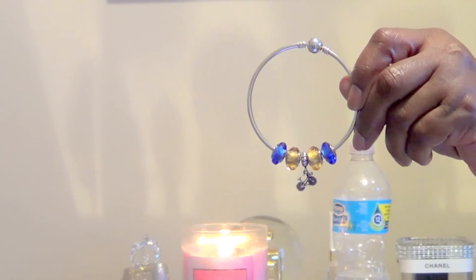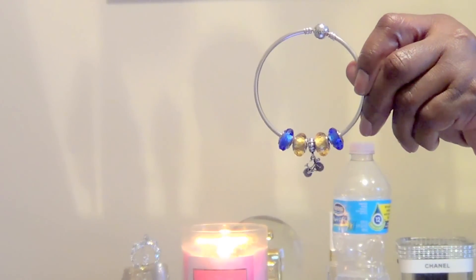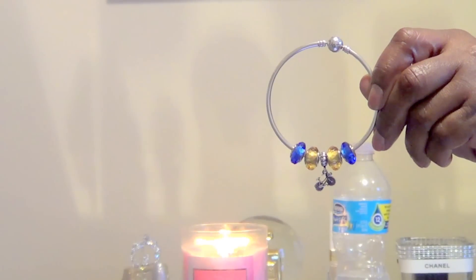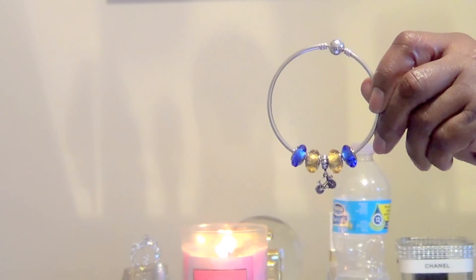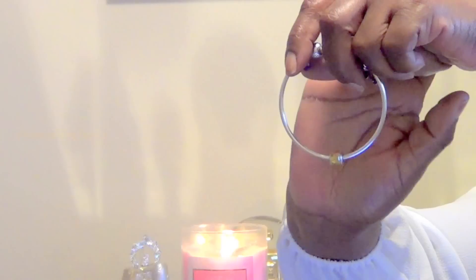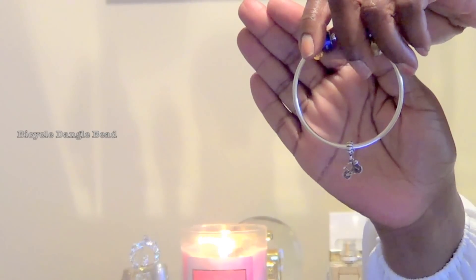This bracelet is on the sterling silver bangle. I have the blue and gold glass beads. And the reason why I chose this combination is because my high school colors were blue and gold. This is the fascinating blue bead. This is the fascinating ochre. This is the bicycle dangle bead.